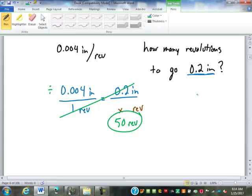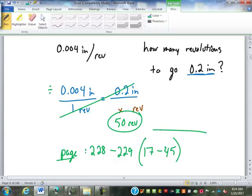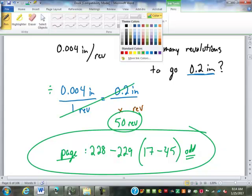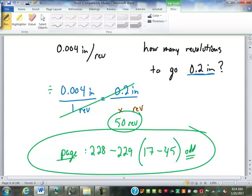I gave you guys a packet yesterday. In that packet. We're going to continue with pages 228 to 229. Problem 17 through 45. You just want to do the odds, that's fine. You got that packet, right? All right. 17 through 45, on page 228 to 229.